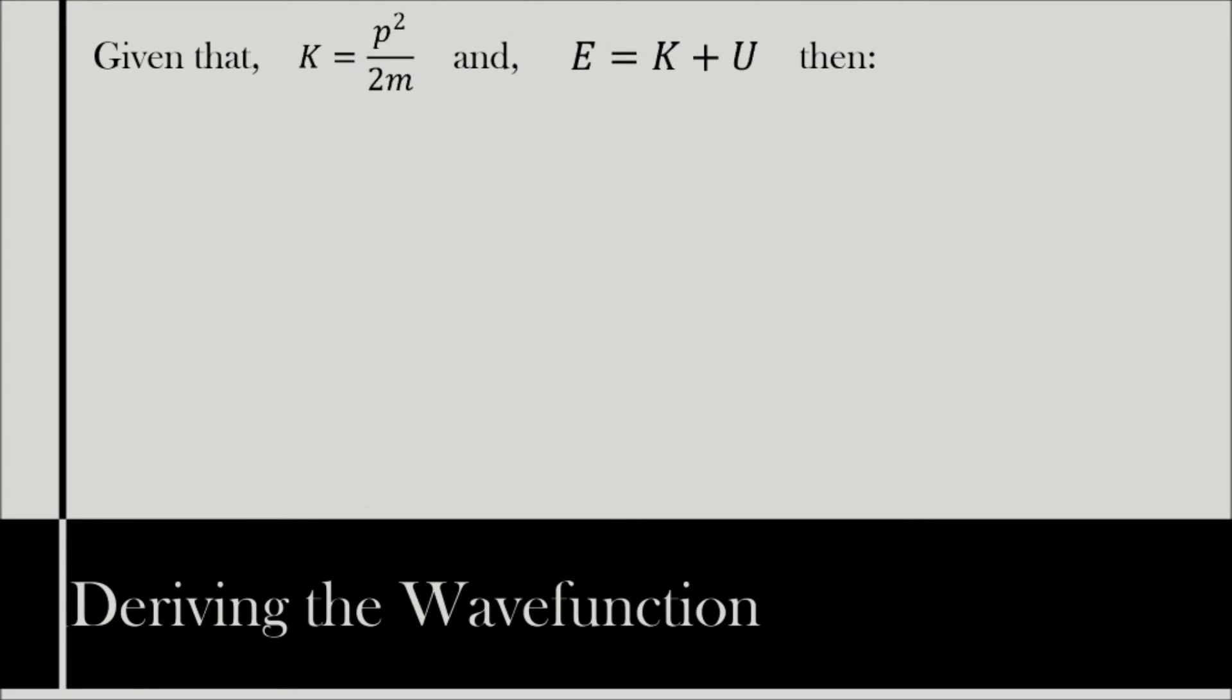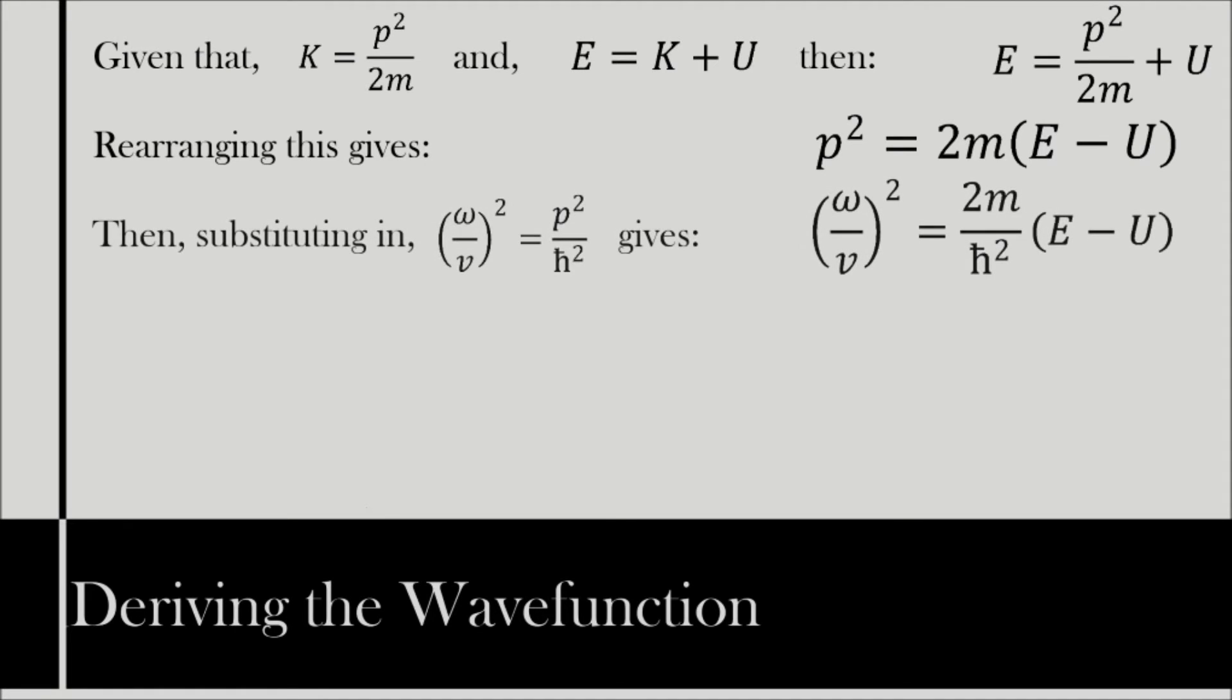Noting that the non-relativistic equation for kinetic energy is K equals p² over 2m, and that the total energy of a system is the sum of its potential and kinetic energies, that is, E equals K plus U. We can obtain via substitution the equation E equals p² over 2m plus U, which is then rearranged to give p² equals 2m(E - U).